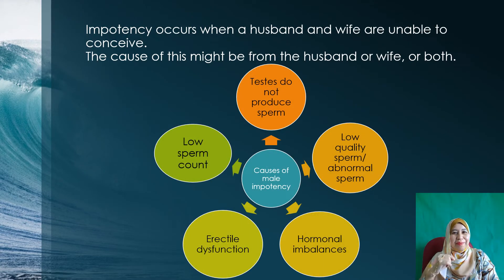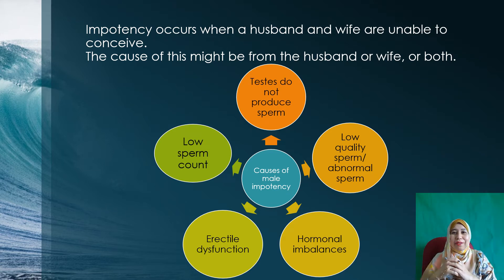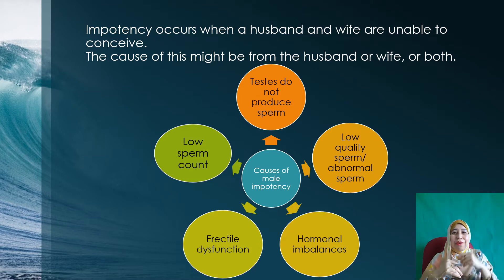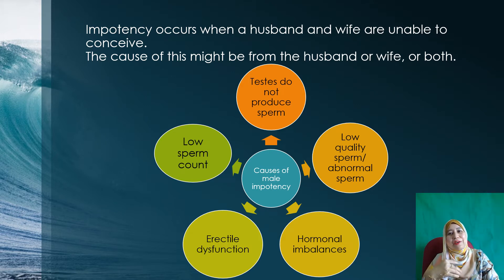Impotency occurs when the husband and wife are unable to have a child. The causes may come from the husband, the wife, or both of them. In this slide, we are going to see the causes of male impotency.